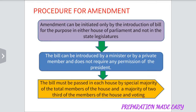Now let us see the procedure for amendment. First, amendment can be initiated only by the introduction of a Bill for the purpose in either House of the Parliament and not in the State Legislature. Two, the Bill can be introduced by a Minister or by a private member and does not require any prior permission from the President.